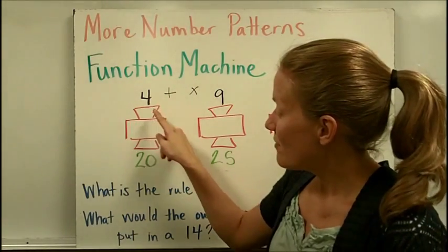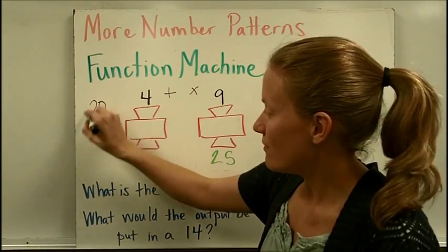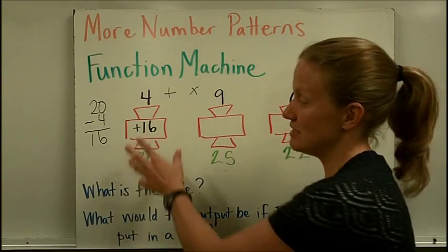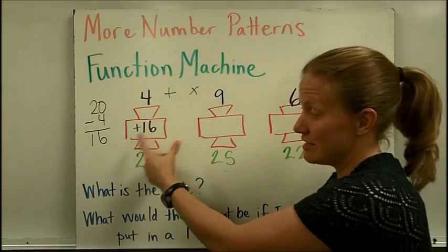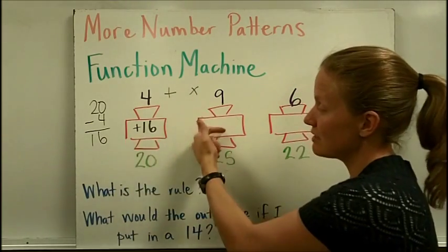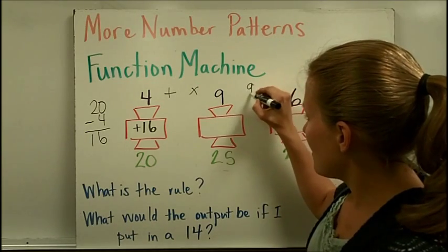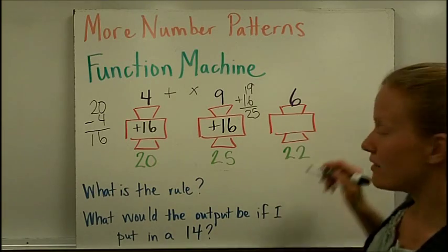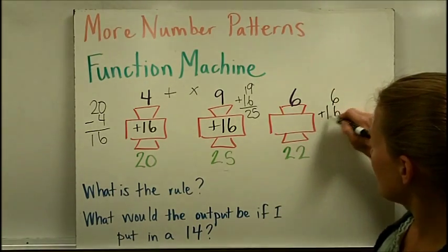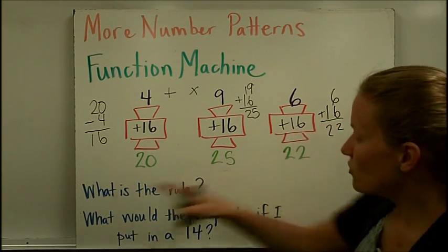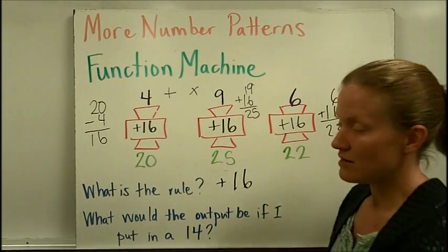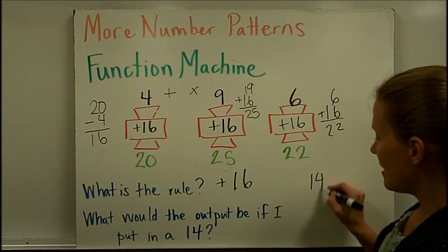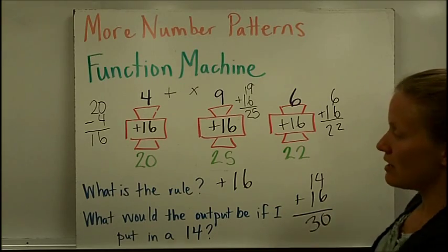So I'm going to think 4 plus what gave me 20? I could do it this way and go 20 minus 4, think backwards and get 16. So 4 plus 16 gave me 20. Now it's not safe to say that's definitely the pattern because there could be a different pattern. It could be a times 5 pattern because 4 times 5 would make 20. So let's go to the next one and try first to see if plus 16 works. 9 plus 16 does in fact give me 25. 6 plus 16 does give me 22. So the rule for this particular function machine is adding 16 to whatever number you put in. So then it asks what would the output be if I put in a 14. If I stick in a 14, the function machine says to add 16 to it and I'm going to get 30 as my output.